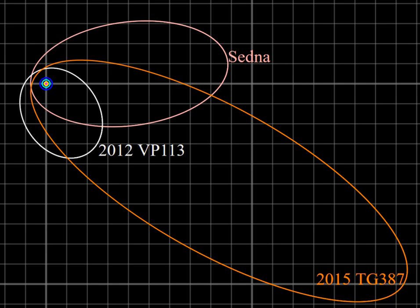Some astronomers, such as Scott Shepard, consider the sednoids to be inner Oort cloud objects, though the inner Oort cloud, or Hill's cloud, was originally predicted to lie beyond 2,000 AU, beyond the aphelia of the three known sednoids.